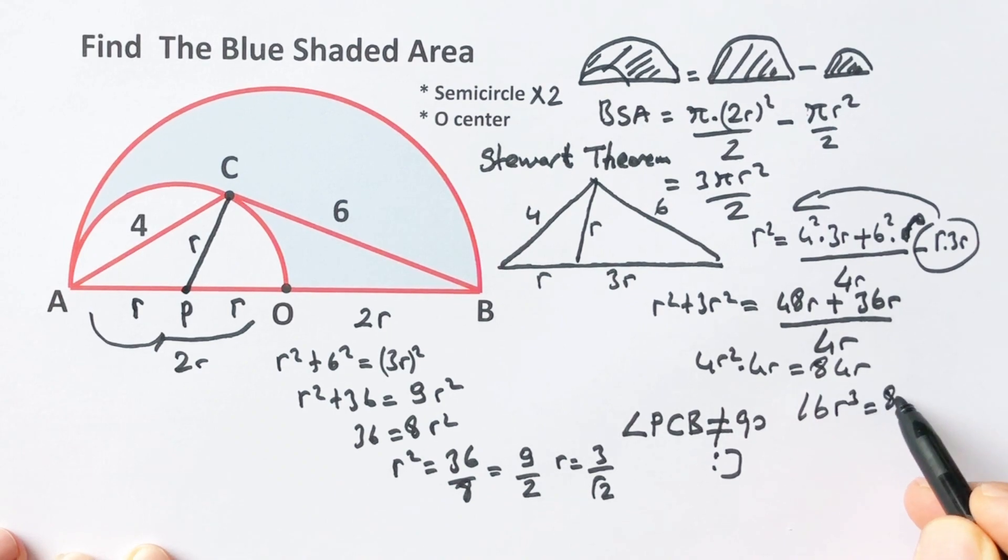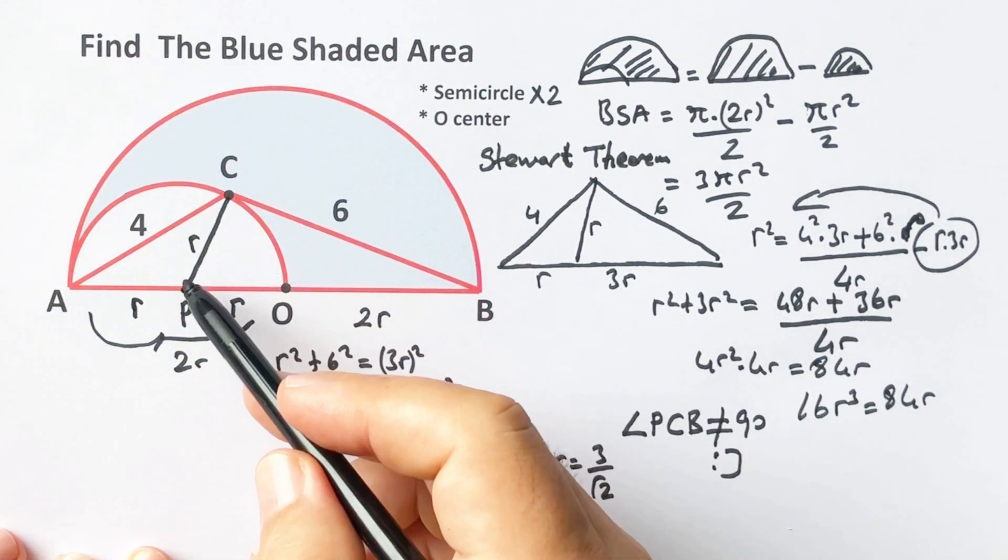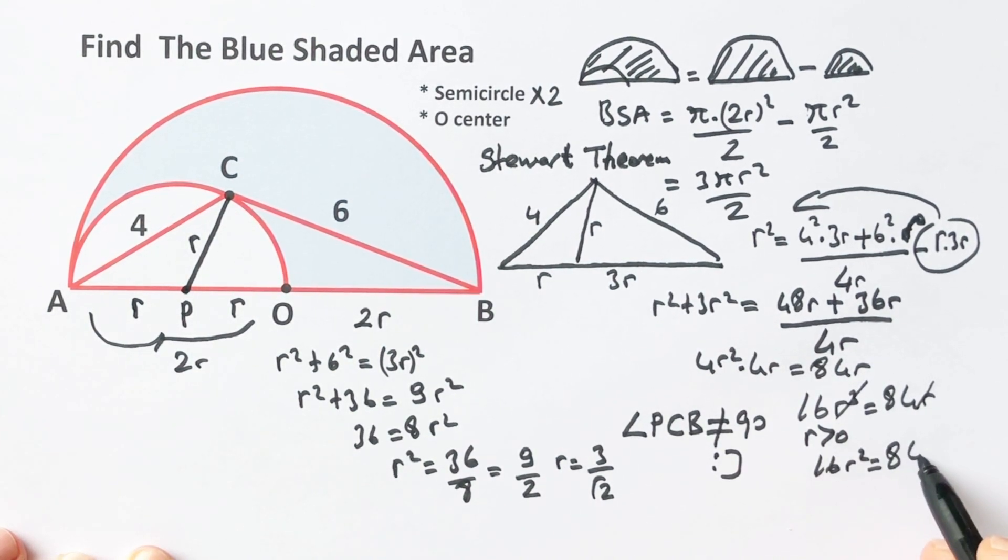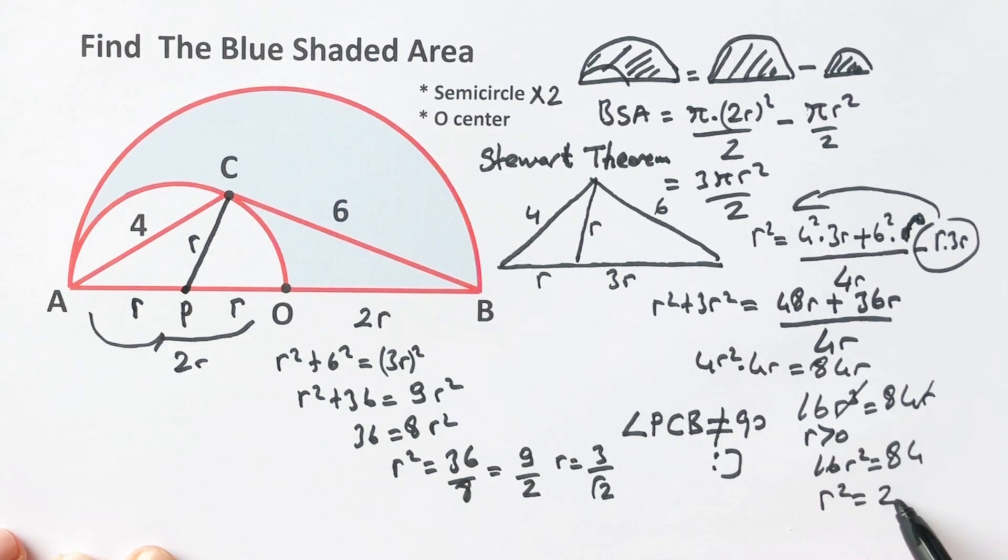Therefore, we know that r is greater than zero, so we can simplify the expression. 16r² equals 84, therefore r² equals 21 over 4.